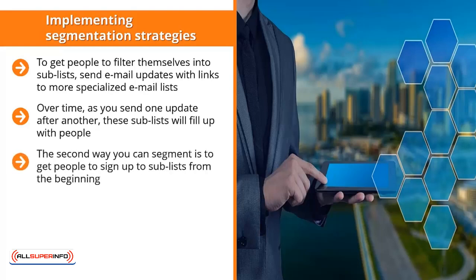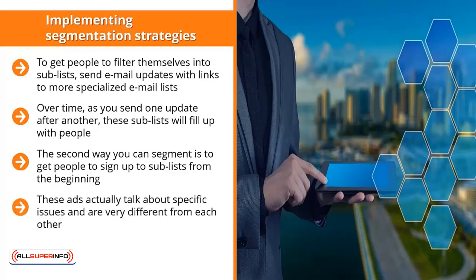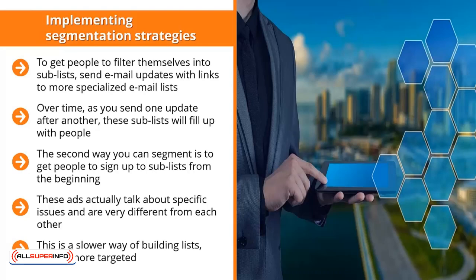The second way you can segment is to get people to sign up to sub-lists from the beginning. You're not starting out with a general list. Instead, when people go to your blog or website, they see different ads for mailing lists. These ads talk about specific issues and are very different from each other. When somebody clicks on a particular ad, they sign up for a list that only talks about the issues raised by that ad. They also only offer incentives that address tightly defined specific issues. This is a slower way of building lists, but it's more targeted.